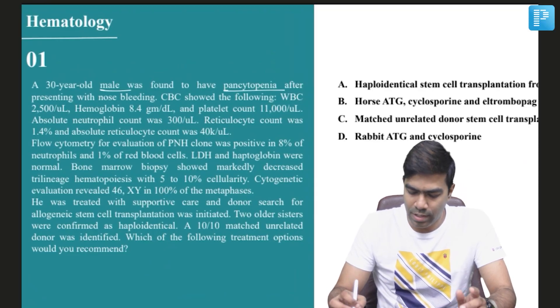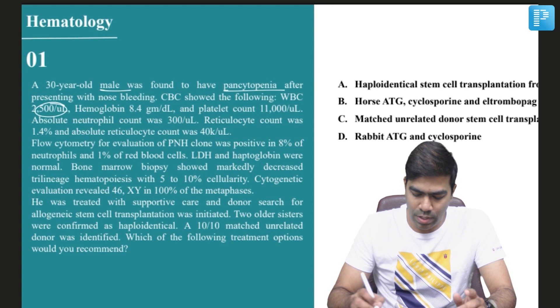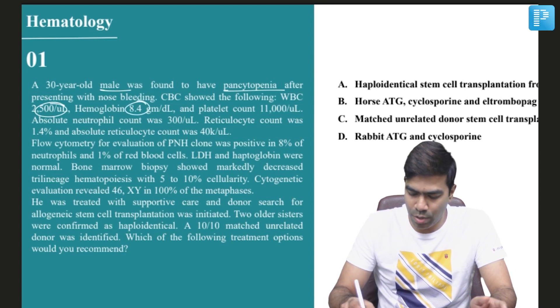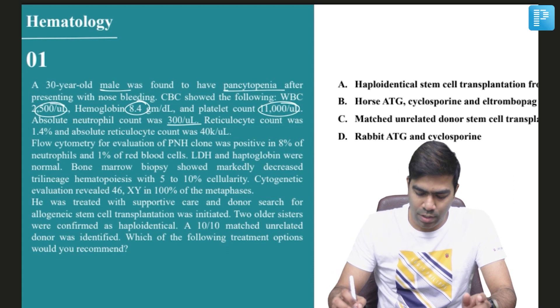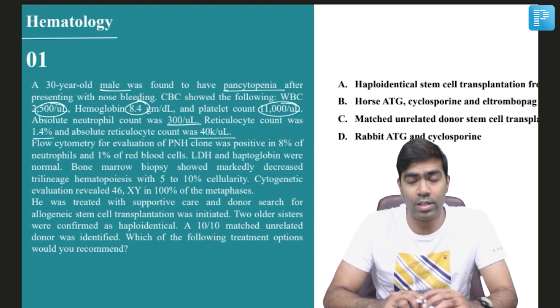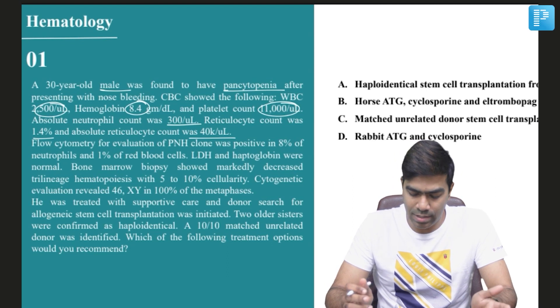After presenting with nose bleeding, CBC showed the following: WBC 2500, hemoglobin 8.4, platelet is 11,000, and ANC is 300. Reticulocyte count was 1.4% and absolute reticulocyte count was 40,000, which clearly says that this patient